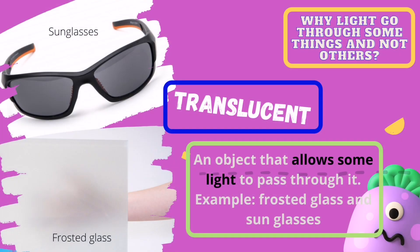The previous types of objects show how they allow or block light. But are there objects that do some of both? Absolutely — we call these translucent objects. Translucent objects allow some light to travel through them, but the light does not pass directly through. As it passes through, light scatters, which is why you cannot see things clearly. Examples include frosted glass and sunglasses.